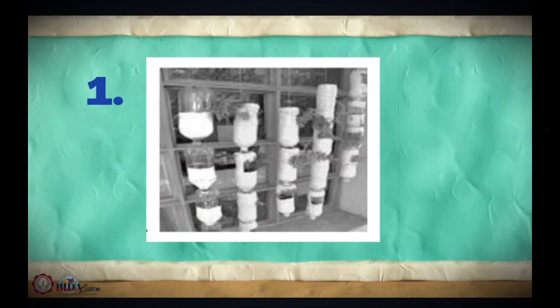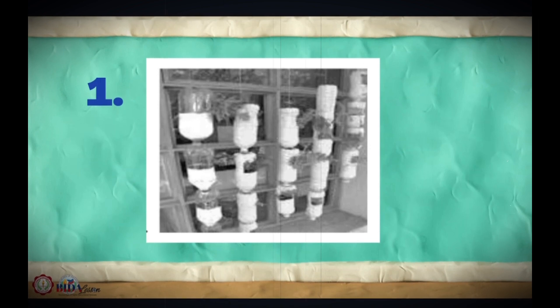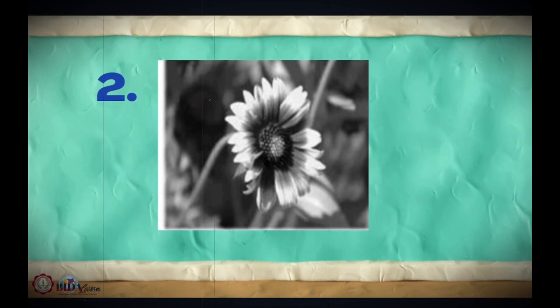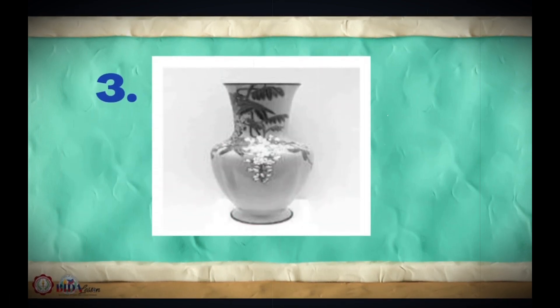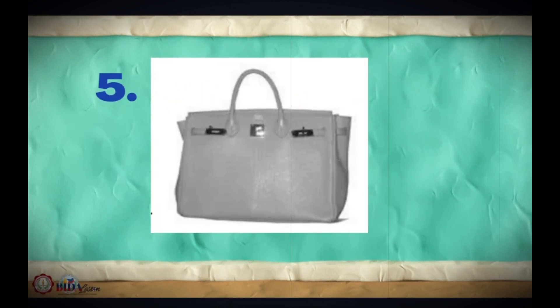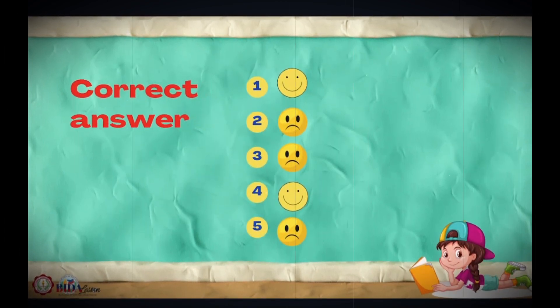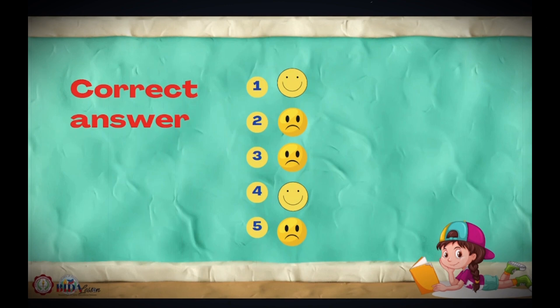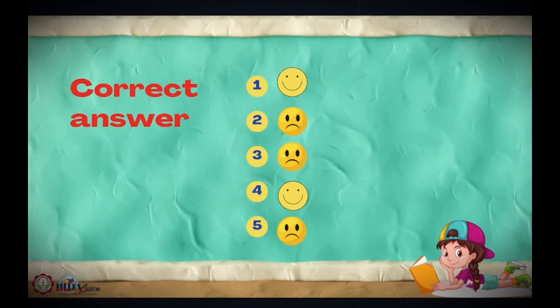Look at picture number 1, picture number 2, picture number 3, picture number 4, and picture number 5. The answers are: number 1 — happy face; number 2 — sad face; number 3 — sad face; number 4 — happy face; number 5 — sad face.